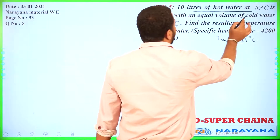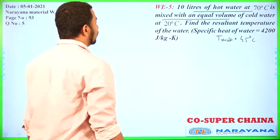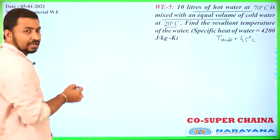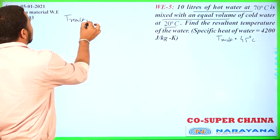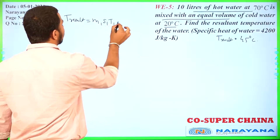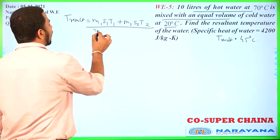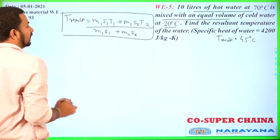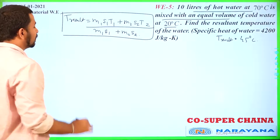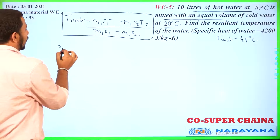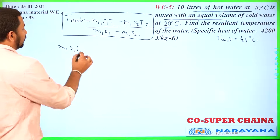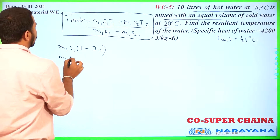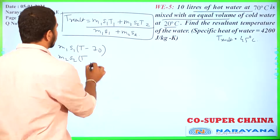10 litre of hot water at 70 degree Celsius is mixed with an equal volume of cold water and the resultant temperature is 20 degree. We have to find the resultant temperature. Directly, T resultant equals m1s1t1 plus m2s2t2 divided by m1s1 plus m2s2. Let the resultant temperature be T. The temperature difference will be m1s1(T − 70) and m2s2(T − 20).